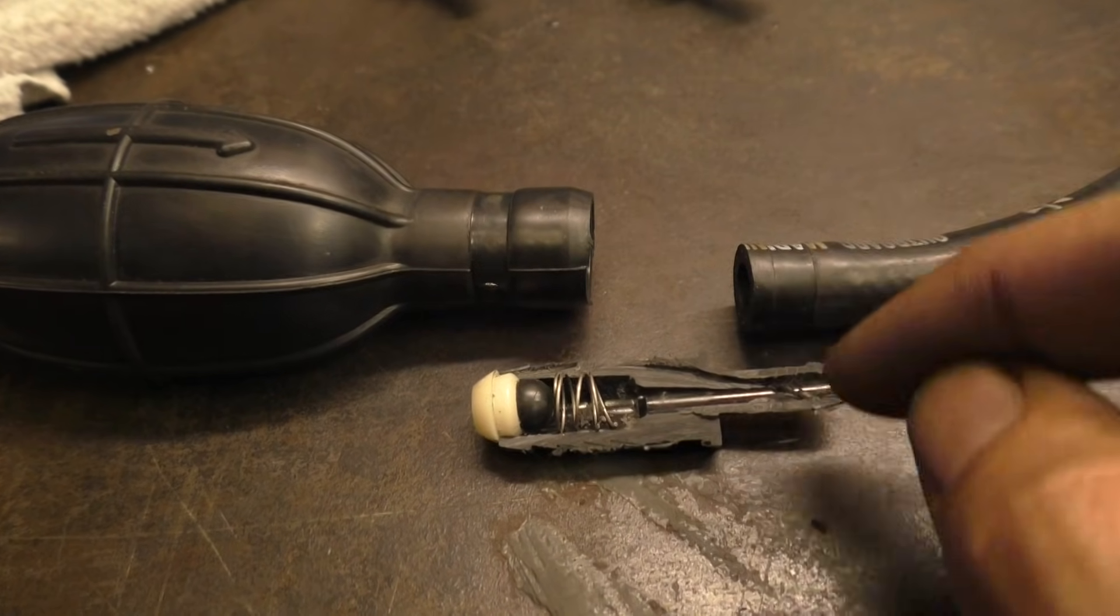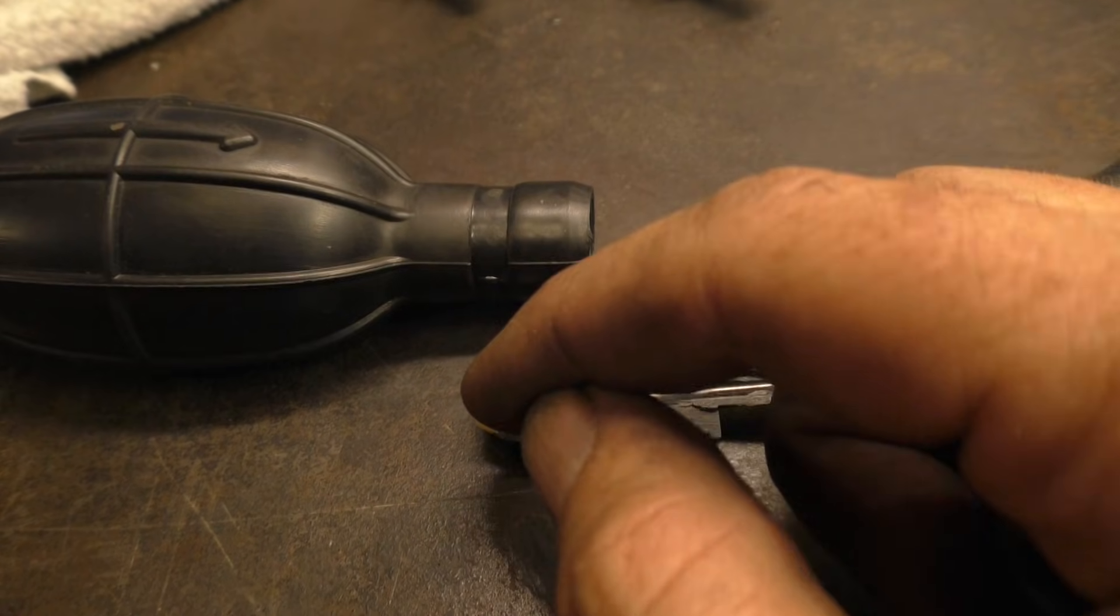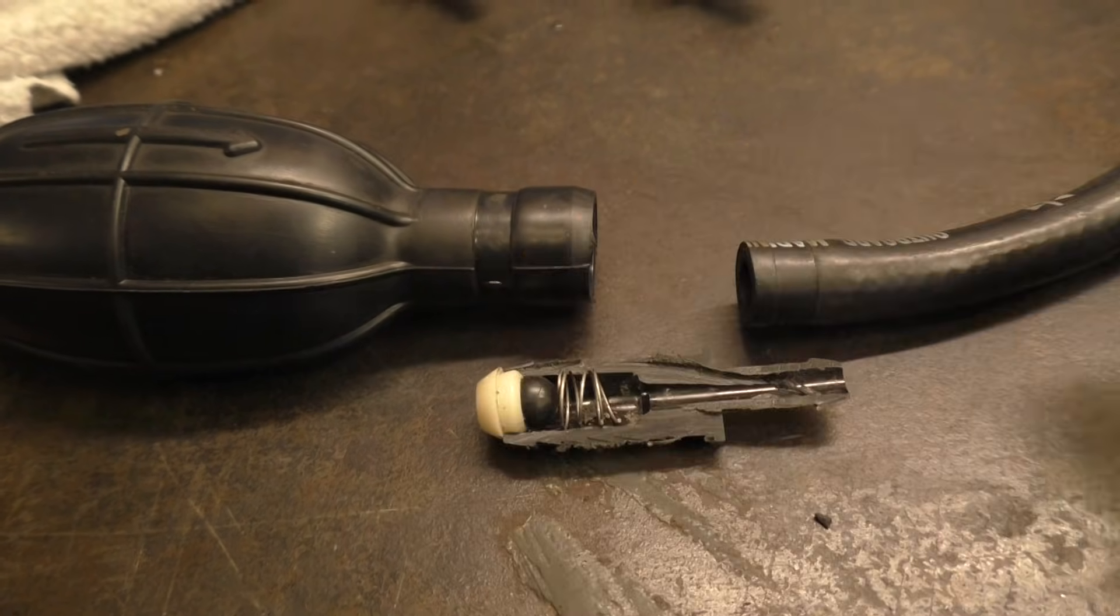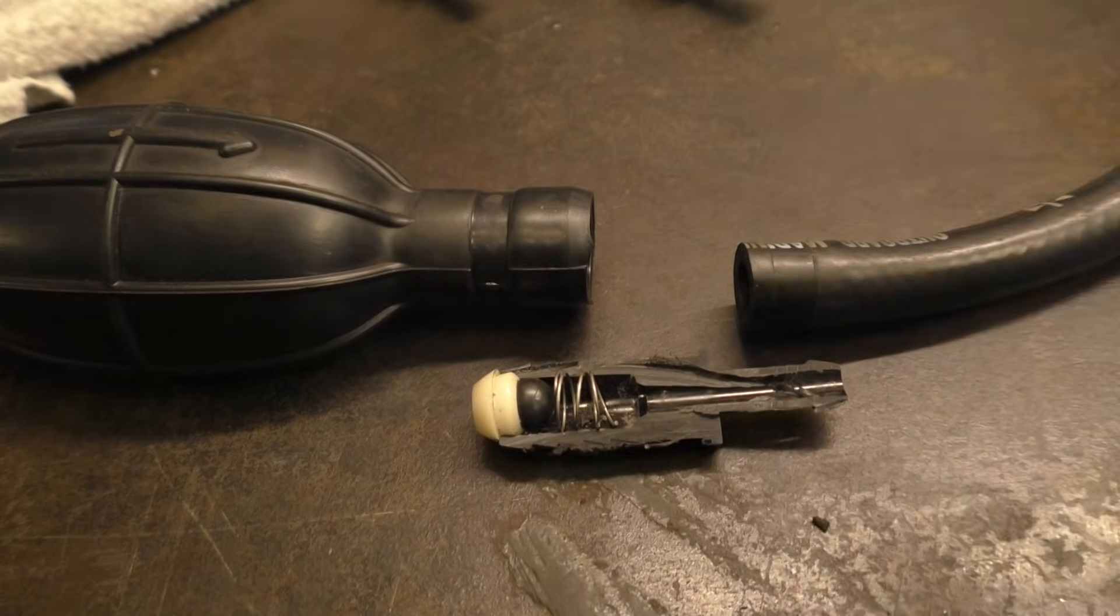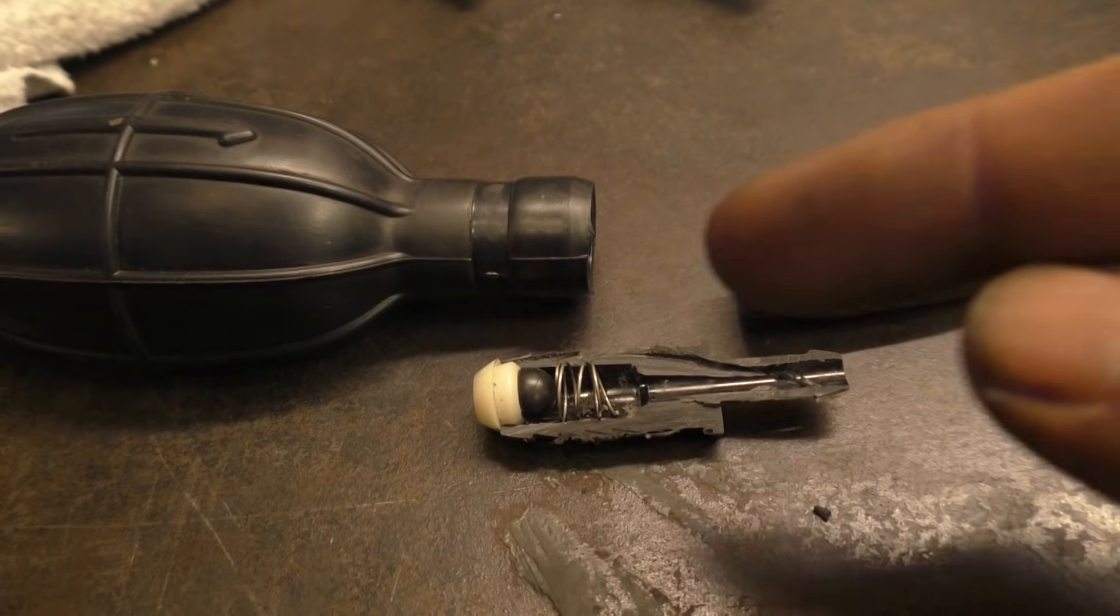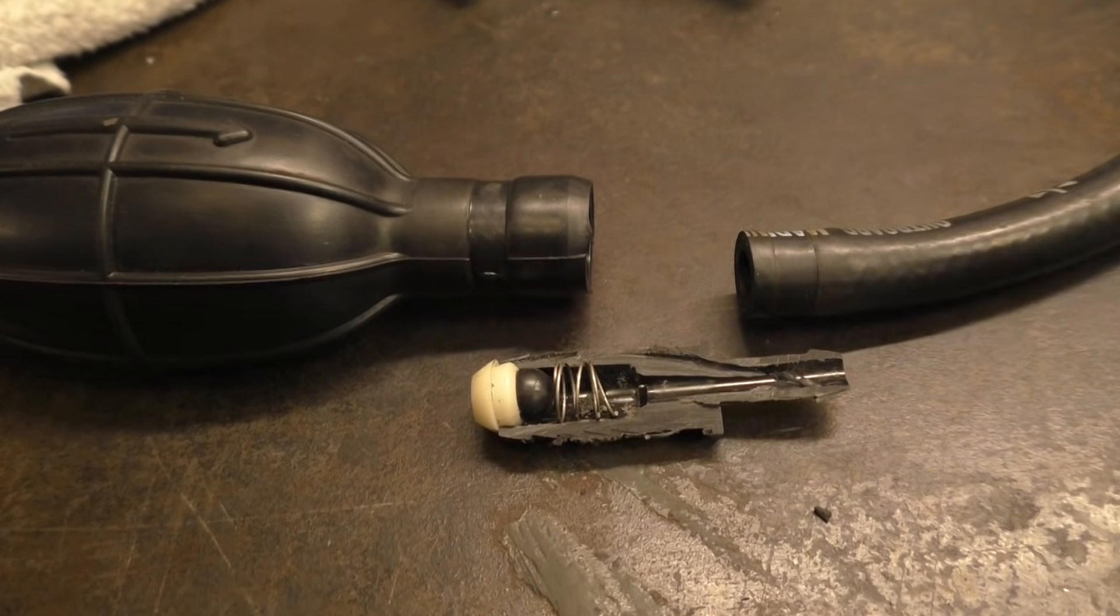But as soon as you let go of the bulb, the spring pushes the ball back and closes it off against the seat. This means that the fuel that flowed through doesn't just get sucked back. Now, the valve on the other side is set up the opposite way, so fuel can come in under vacuum instead of under pressure.